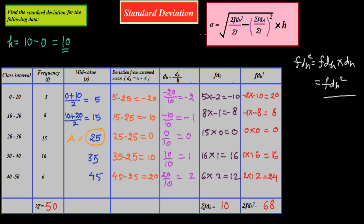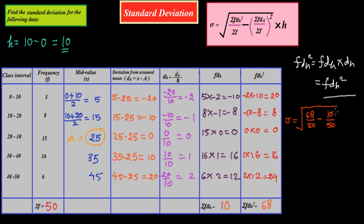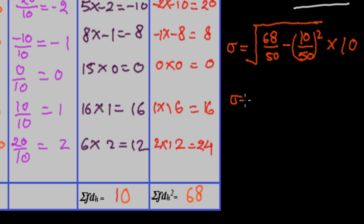Now we put these values into the formula. Sigma equals the square root of: summation of FDH² is 68 over summation of F which is 50, minus summation of FDH which is 10 over summation of F which is 50, whole squared, multiplied by H which is 10.